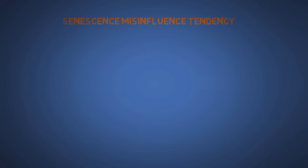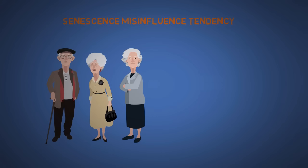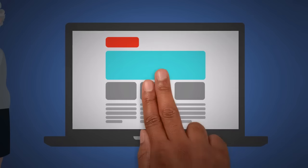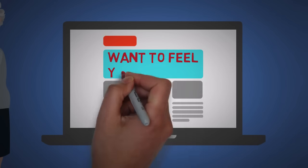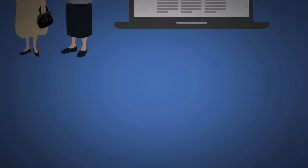The twenty-first is senescence misinfluence tendency. As we age, there is a natural loss of certain skills and abilities. So if you got a website targeted for older people, make sure the fonts are big. Try to speak slower and enunciate your words more.